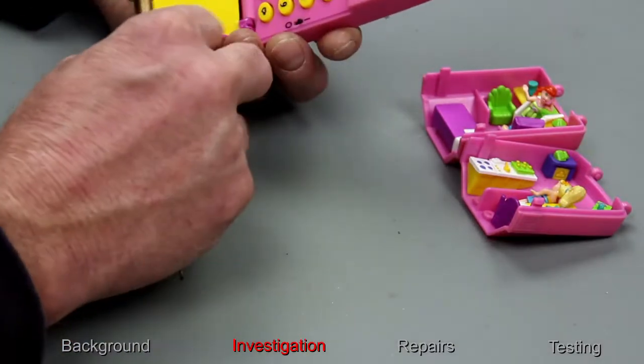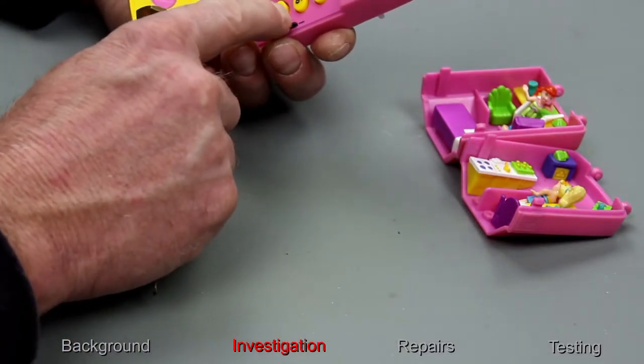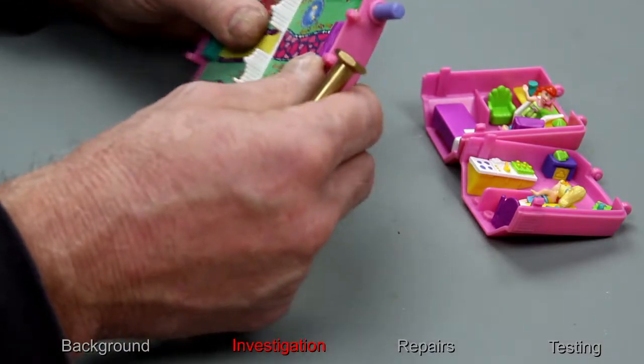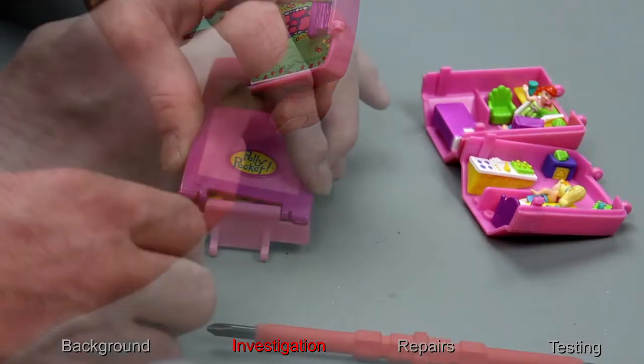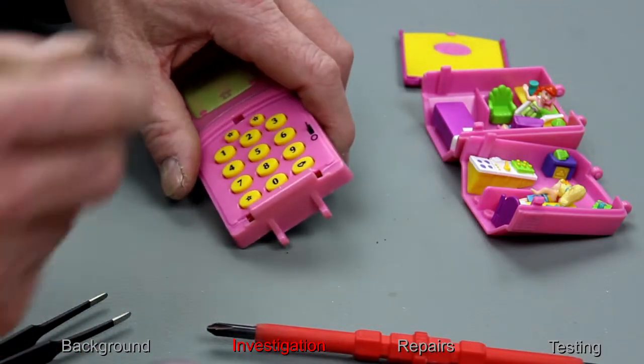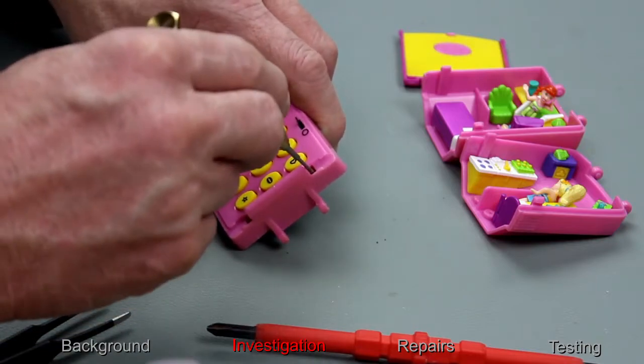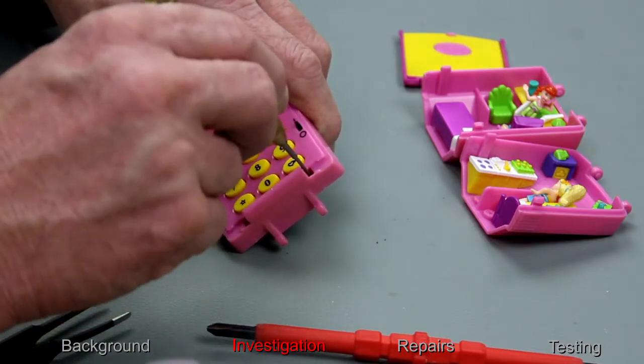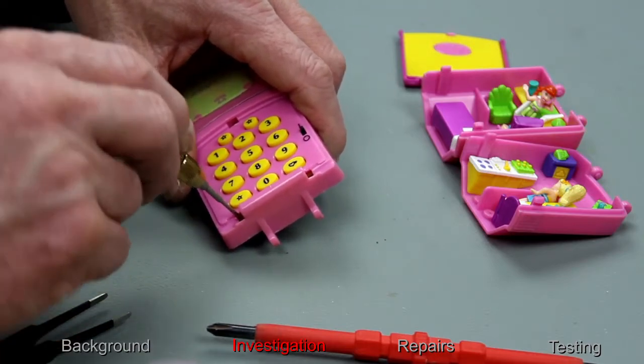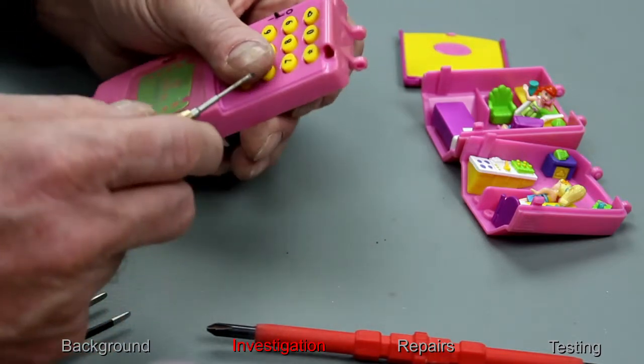Where do you put the batteries then? Missing a trick here, aren't I? Where do the batteries go? It's not obvious how this comes apart.